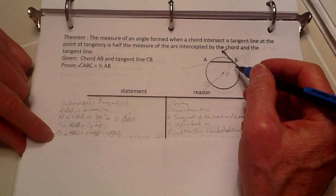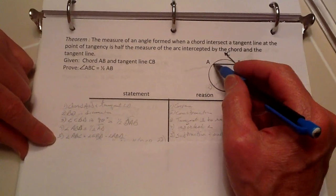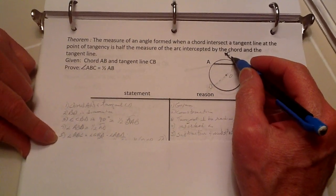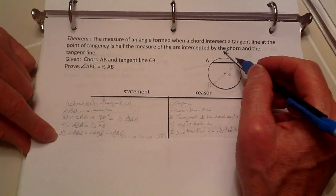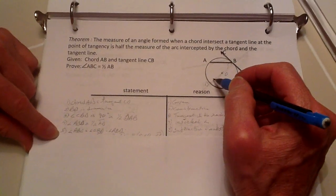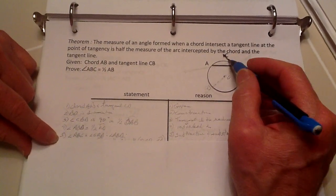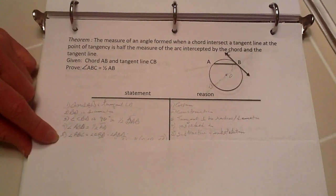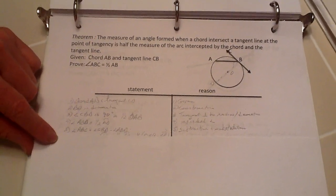We also know that the angle ABC is going to be equal to the large angle of CBD minus this angle here, and that's just by subtraction. And then now,